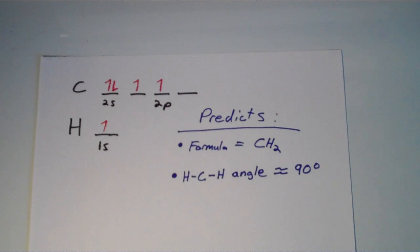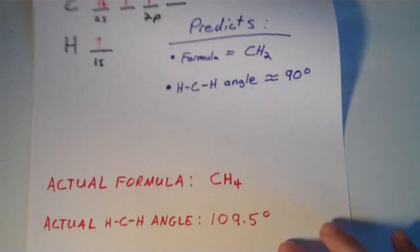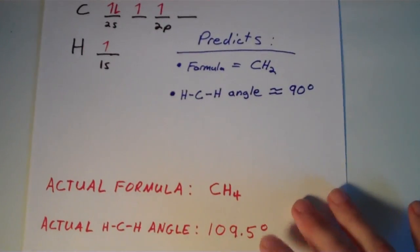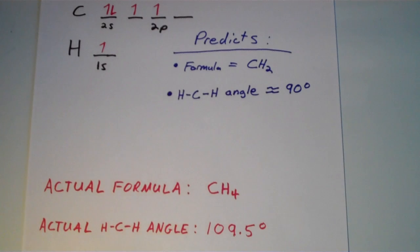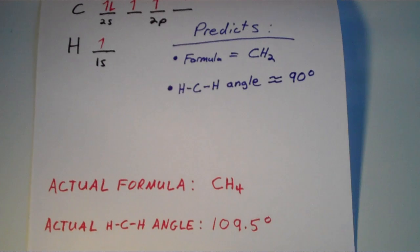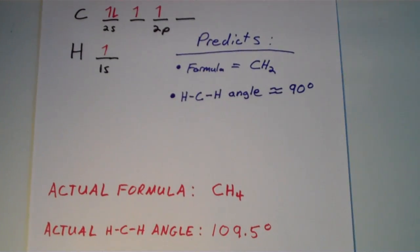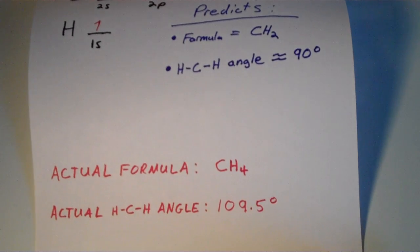And experimental evidence actually has shown that this is clearly not the case. The actual formula of a compound, the compound that consists of just carbon and hydrogen, is actually CH₄. So the hydrogen to carbon ratio is not 2, it's actually 4.